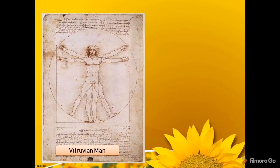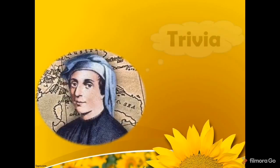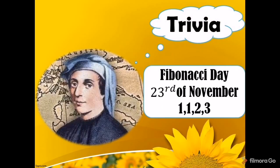Aside from the famous painting Mona Lisa, Leonardo da Vinci was also known for his Vitruvian Man, one of the most important works of the Italian Renaissance. According to Vitruvius, the 15th century drawing is known as the proportions of the human body. Also, did you know that we celebrate Fibonacci Day on November 23rd? That's because November 23 is represented as 1, 1, 2, 3.